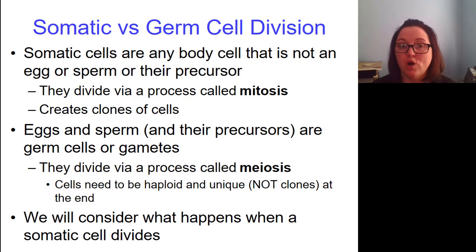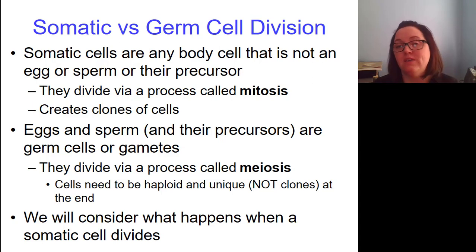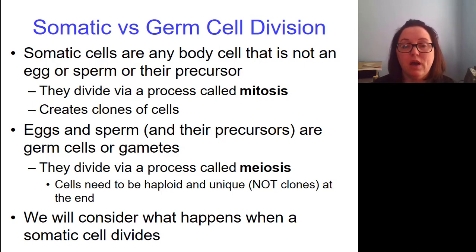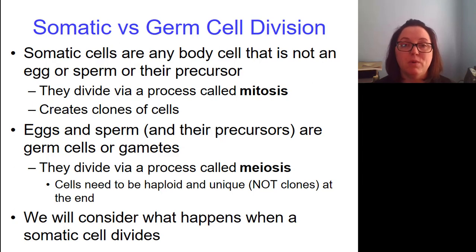Somatic cells divide through a process called mitosis, and the job of mitosis is to clone cells. So you take an epithelial cell, it undergoes mitosis, and at the end you have two epithelial cells that are exactly like one another and look exactly like the starting cell — you're cloning cells. If we're going to make eggs and sperm, these germ cells, we want them to be genetically unique, and that requires a different process called meiosis. Not only do we want the cells to be genetically unique, but they also need to contain half the amount of DNA — we call that haploid. We're going to spend most of our time talking about somatic cell division, in other words, mitosis.